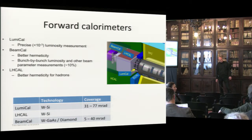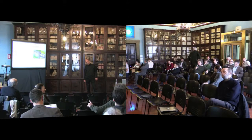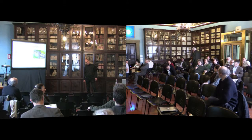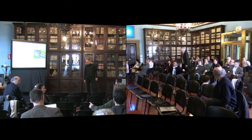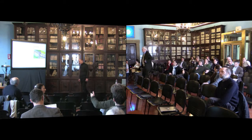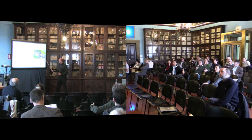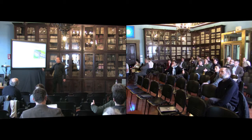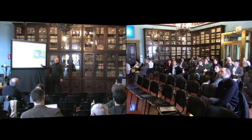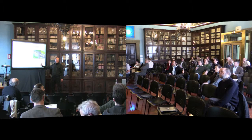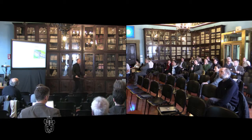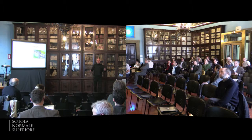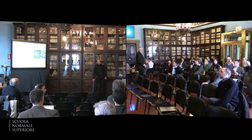It was noted that the SiD detector plans to have the luminosity calorimeter at around 1.55 m, but SiD is overall smaller and uses a 6 Tesla field — both of these allow a smaller L*. The driving factor is really the magnetic field strength. The conclusion is that the design must be optimized for each specific case.